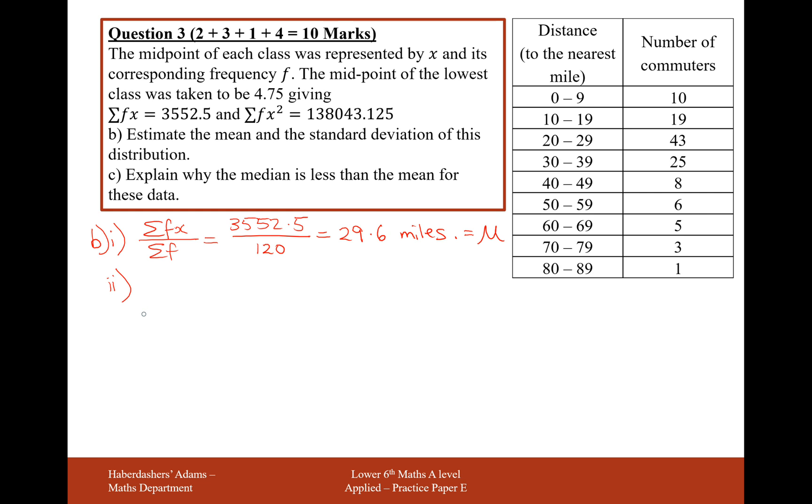For the standard deviation, it's going to be the square root of the sum of fx squared over the sum of f minus the mean squared. So what we're going to have here is a big square root. We've already got the sum of fx squared. That's 138043.125. Use all the decimal places they give you to get as accurate an answer as possible. We know we've got 120 people, and we know that our mean was 29.6 squared. And in this case, we get 16.6 miles. So on average, if you live in Devon, you're going to have to travel 16.6 miles from the train station.